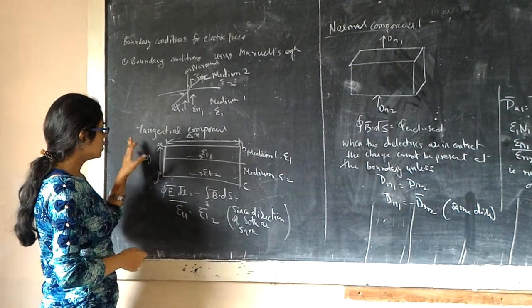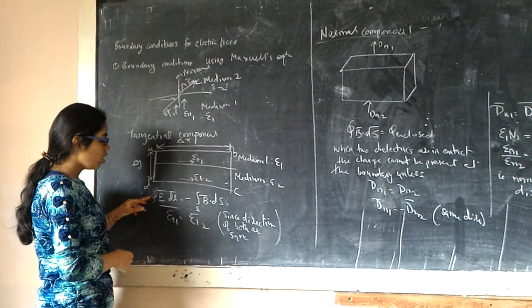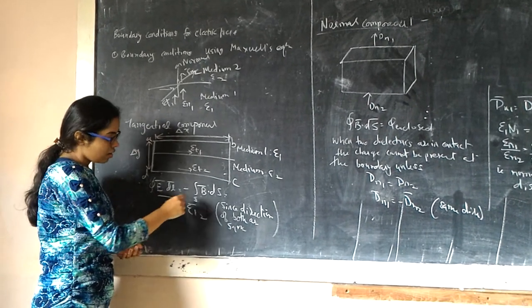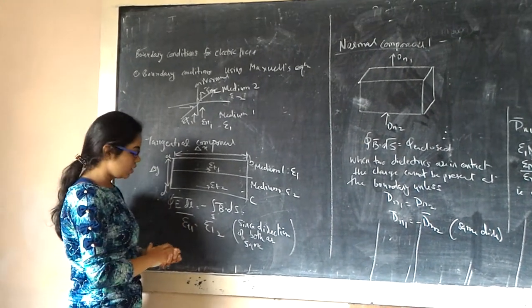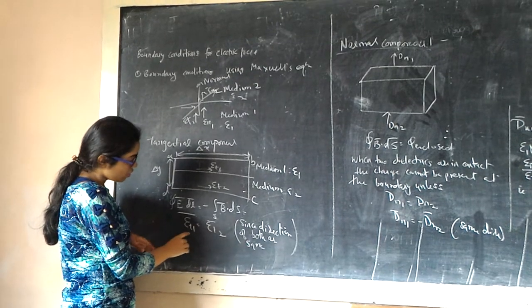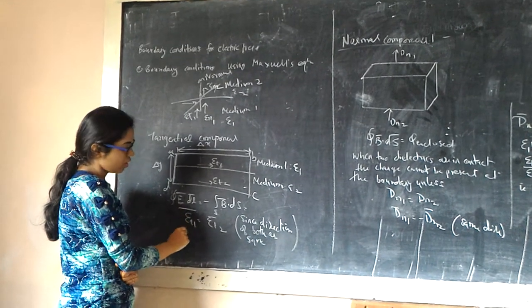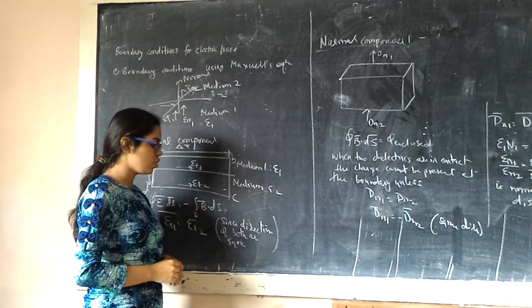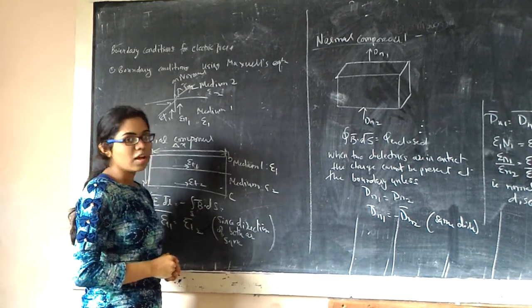And the relation for the tangent component is closed integral E bar dot DL equals to minus d by dt of B bar. After integrating, ET1 equals to ET2. The direction is in the direction of tangent.